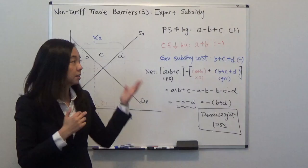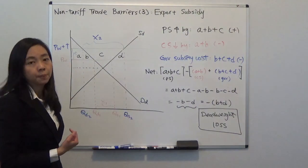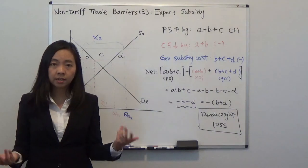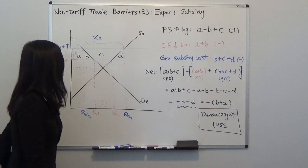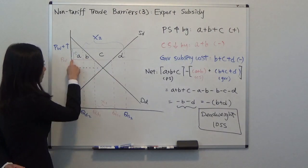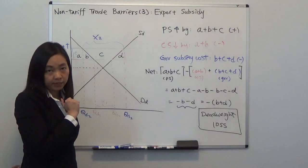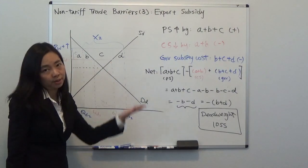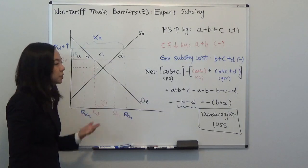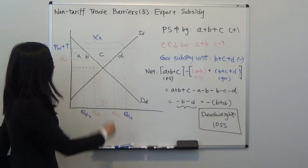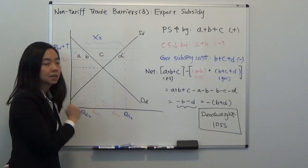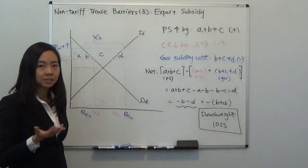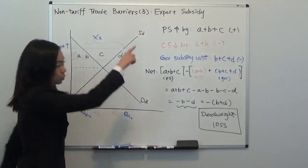How does that affect consumer surplus and producer surplus? Producer surplus is going to increase. Producer surplus is the area below the price and above the supply curve. Initially our producer surplus was the triangle area below PW above the supply curve. With the export subsidy, domestic producers receive PW plus T whether they sell locally or export — they get the T dollars from the government when they export, and raise the price to domestic consumers when selling locally. So producer surplus goes up by A plus B plus C.